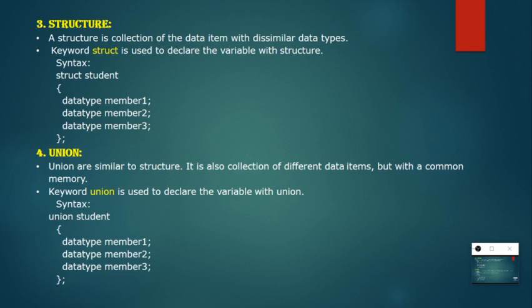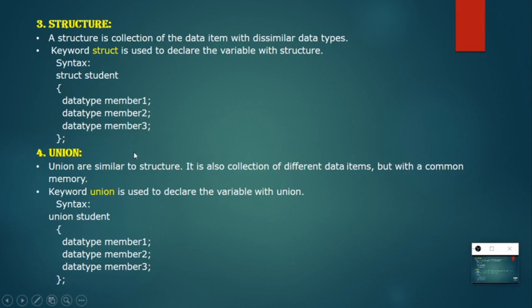Next are structure and union. A structure contains dissimilar data types, and a union also contains dissimilar data types — so they are similar in that regard. The difference is that union stores data in common memory. Structure uses the keyword struct and union uses the keyword union; otherwise the syntax and examples are the same.